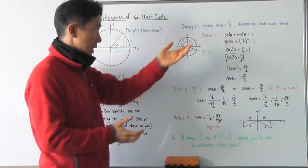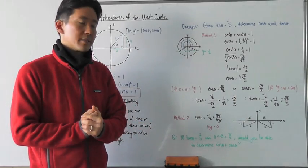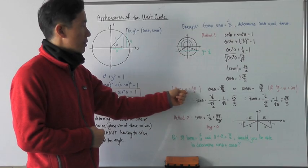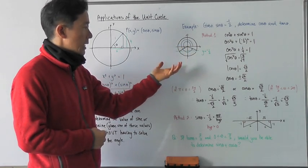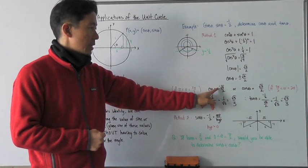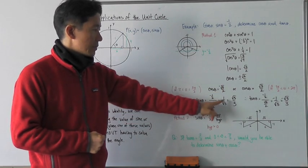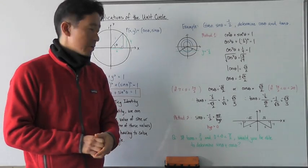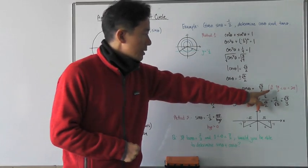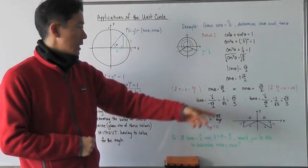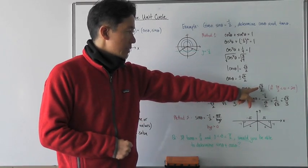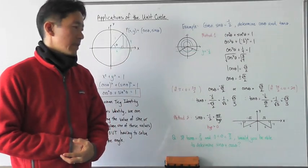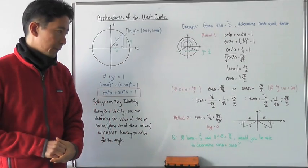Since the quadrant isn't specified here, let's look at both cases. If theta is in the third quadrant, then cosine is negative, so cosine theta equals negative root three over two. Tangent would then be root three over three, since tangent equals sine theta over cosine theta. On the other hand, if theta is in the fourth quadrant, cosine has to be positive, and tangent theta would be negative root three over three.